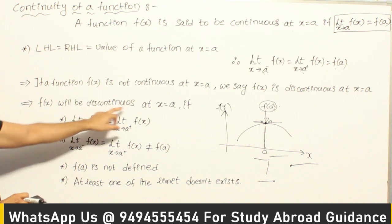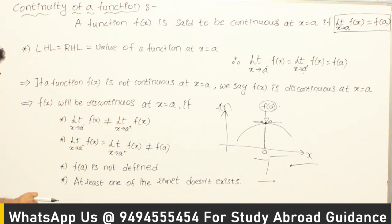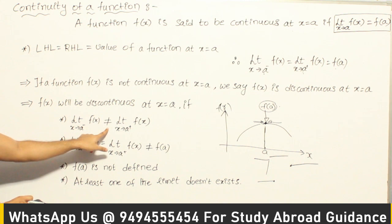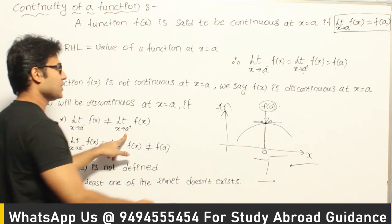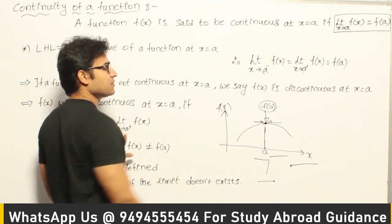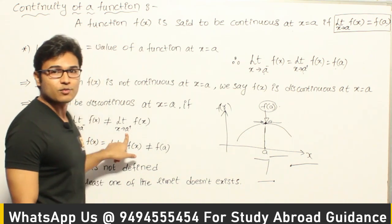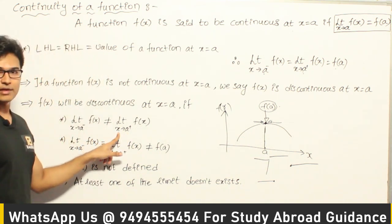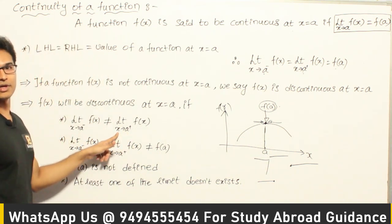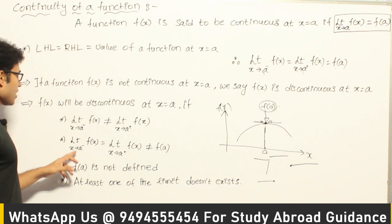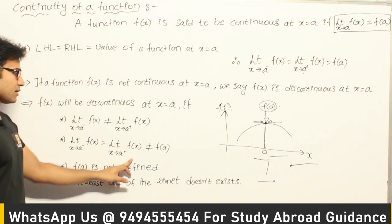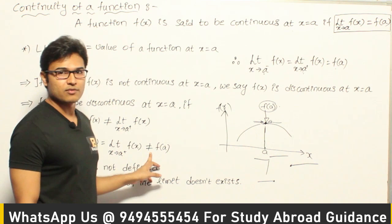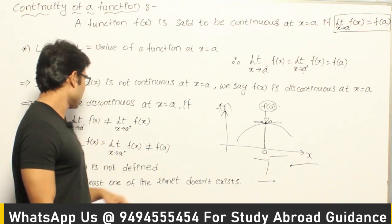f(x) will be discontinuous at x = a if the left-hand limit is not equal to the right-hand limit — meaning if the left side has some value and the right side has some value and both are not equal, then it is discontinuous. Or if the left-hand limit equals the right-hand limit but it is not equal to the value at a.